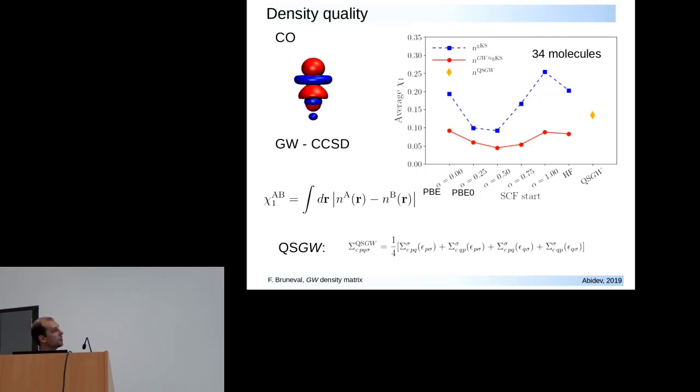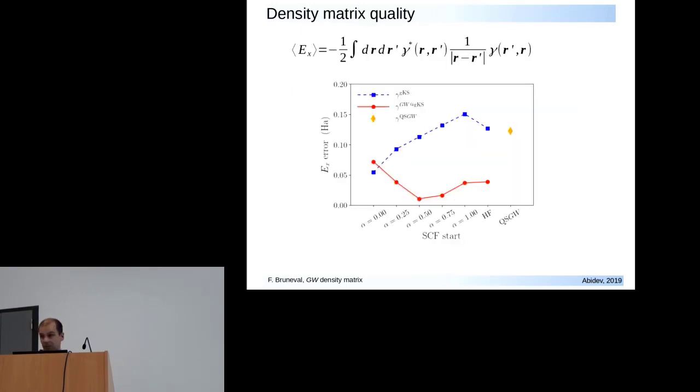The dipoles that you get are very similar to the exact one and the self-consistent GW calculation. Testing this on many more molecules, this medium-sized benchmark of 34 molecules, then you can evaluate the error in the density. The error in the density compared to coupled cluster is the lowest of all. It's lower than PBE0. So this gives good densities and good exchange energies.